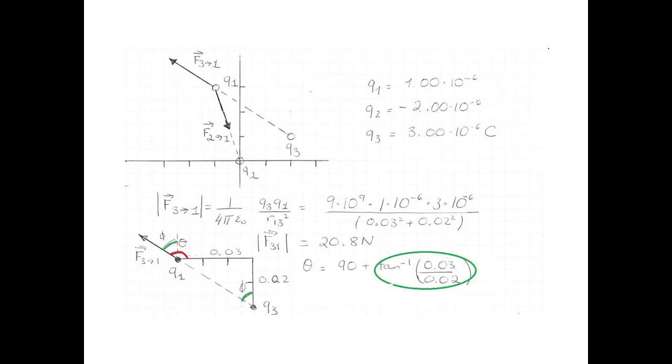And the way we get phi is with the inverse tangent of 0.03 over 0.02. So remember, opposite side over adjacent side. That angle is 146.3 degrees.